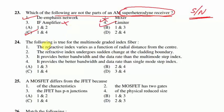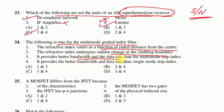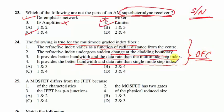Question 24 is from optical fiber communication regarding multimode graded index fiber: Statement 1 — refractive index varies as a function of radial distance from center. Statement 2 — refractive index undergoes sudden change at cladding boundary. Statement 3 — it provides better bandwidth and data rate than multimode step index. Statement 4 — it provides better bandwidth and data rate than single mode step index. Questions from optical fiber communication are very important.